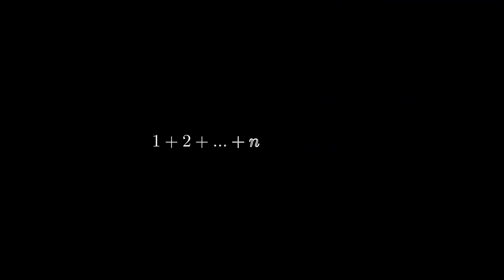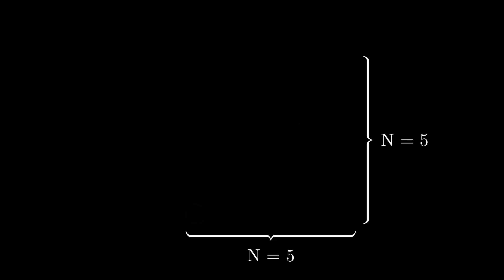Of course, this calculation works for any range of numbers from 1 to whatever upper limit we desire. Therefore, we can generalize it and devise the following formula: n times (n plus 1) divided by 2, with n being the upper end of a number range. Here's another way to picture this.